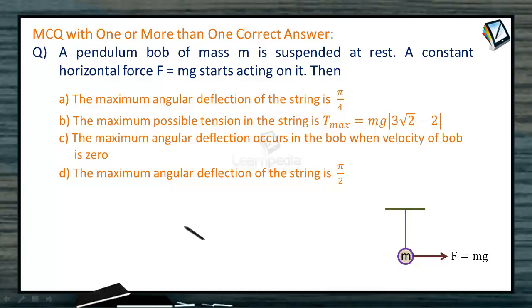MCQ with one or more than one correct answer. A pendulum bob of mass M is suspended at rest. A constant horizontal force F equals Mg starts acting on it.